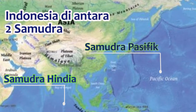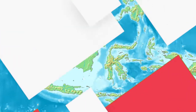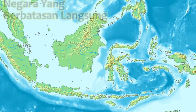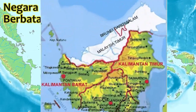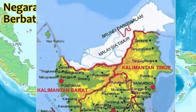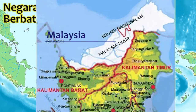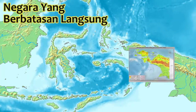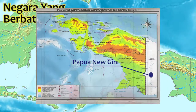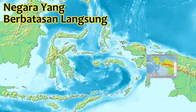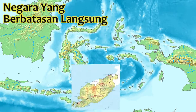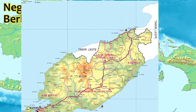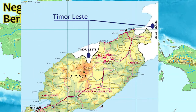Adapun negara yang berbatasan darat langsung dengan Indonesia adalah Malaysia di bagian utara Pulau Kalimantan, Papua Nugini di bagian timur Pulau Papua, dan Timor Leste di bagian timur Pulau Nusa Tenggara Timur.